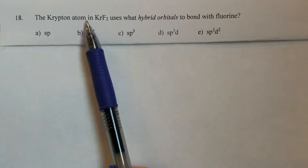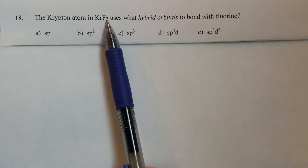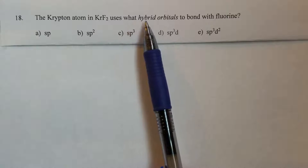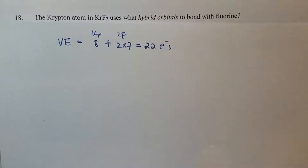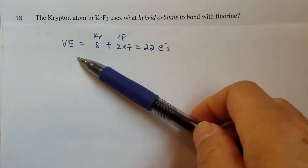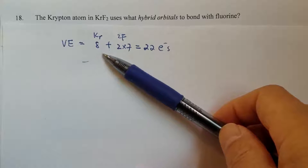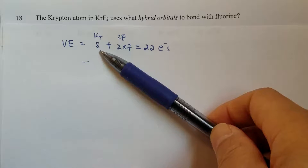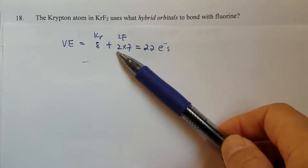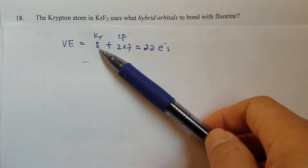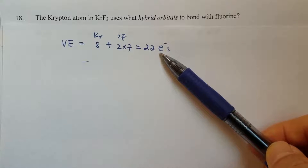The krypton atom in krypton difluoride uses what hybrid orbitals to bond with fluoride? First, we need to find out the total number of valence electrons for the molecule. Krypton has 8 valence electrons because it's in group 8A. Fluorine has 7, and we have two fluorines, so that's 14, plus 8 gives us 22 valence electrons total.